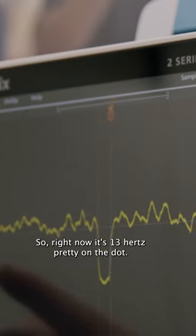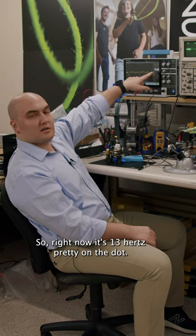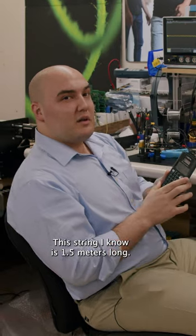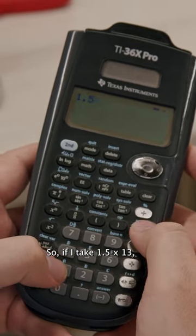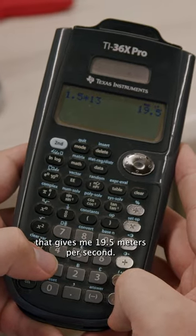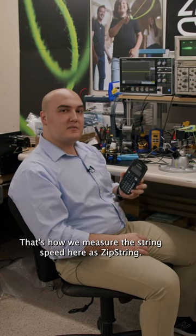We're measuring the frequency here. So right now it's 13 Hertz, pretty on the dot. This string I know is 1.5 meters long. So if I take 1.5 times 13, that gives me 19.5 meters per second. That's how we measure the string speed here at ZipString.